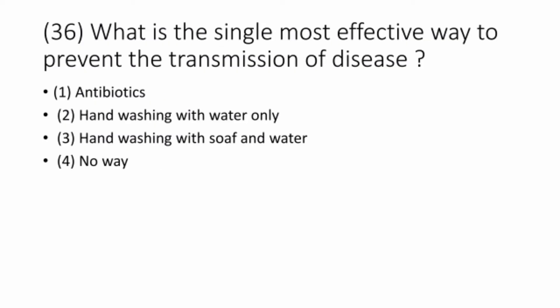Question 36. What is the single most effective way to prevent the transmission of disease? The correct option is option 3: hand washing with soap and water.